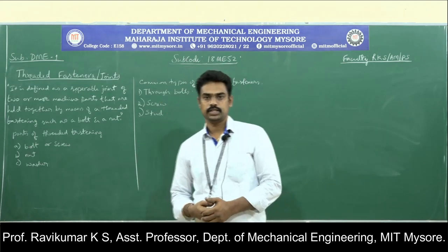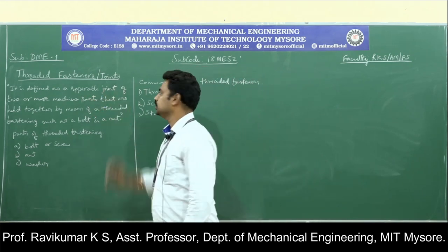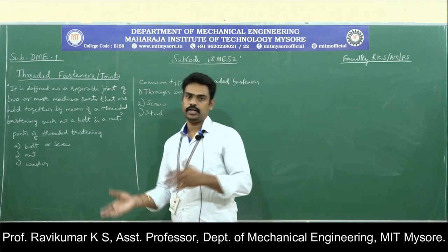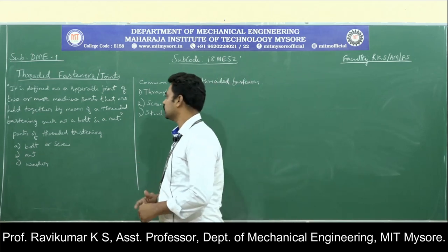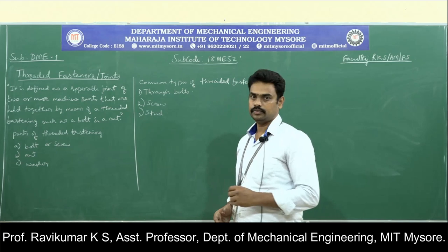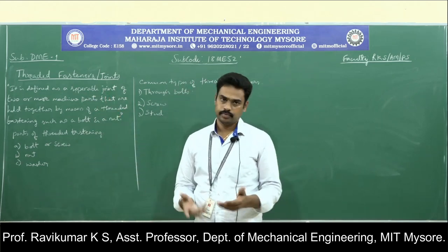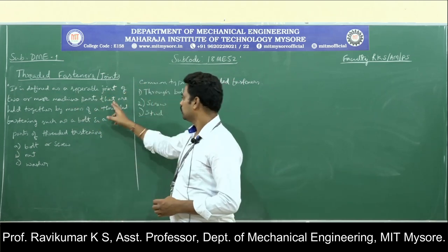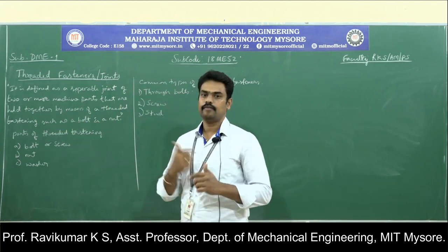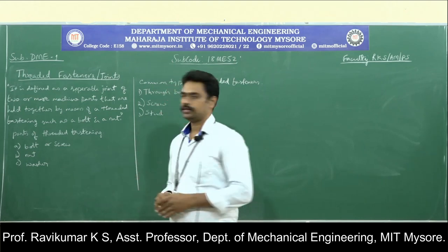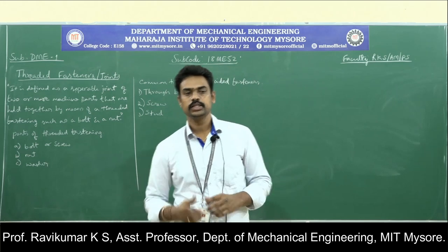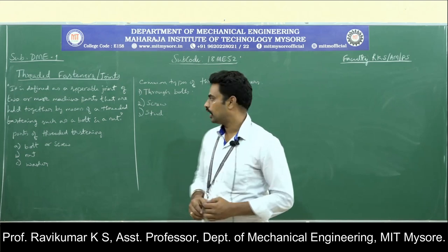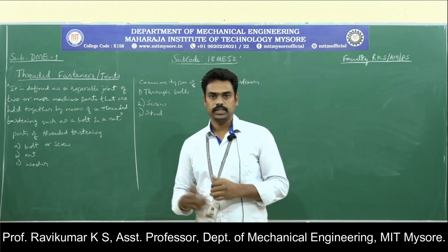The next topic is threaded fasteners, also called threaded joints. This is a temporary joint — you can dismantle and assemble it whenever required. A threaded fastener is defined as a separable joint of two or more machine parts held together by means of a threaded fastening such as a bolt and a nut.